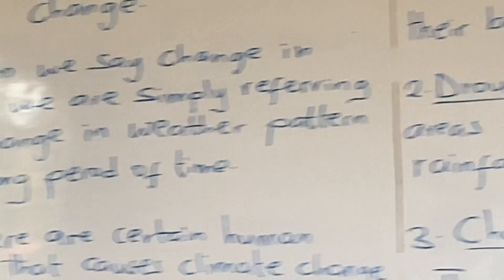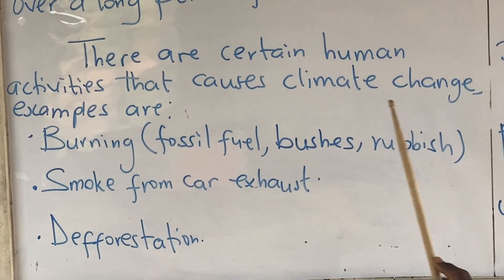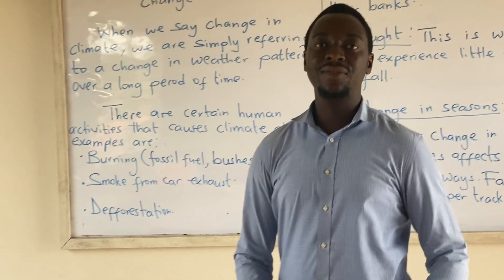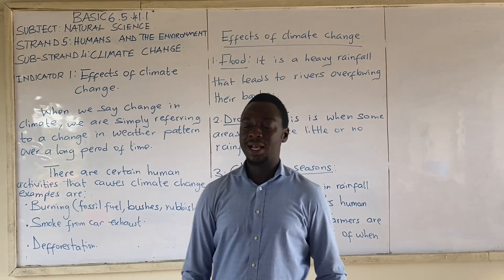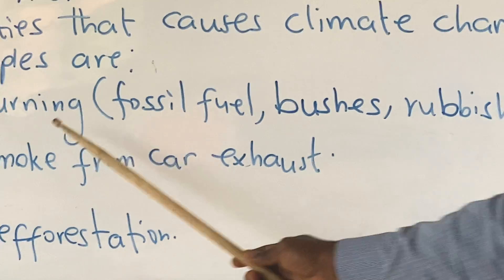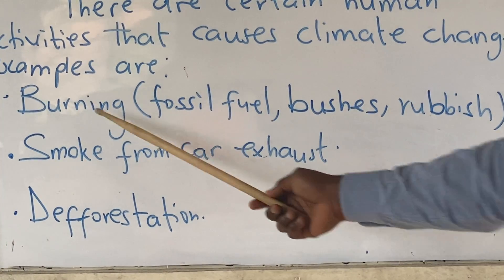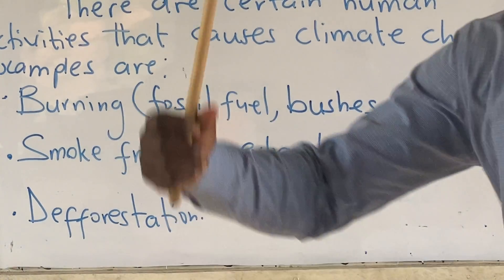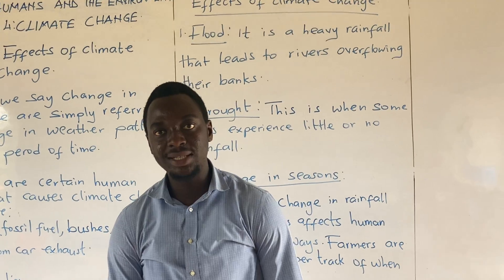There are certain human activities that cause climate change. Climate doesn't just change — there are activities done by human beings that cause it. Examples include burning: burning of fossil fuel, burning of bushes, burning of rubbish. All of this releases smoke into the atmosphere and causes climate change.